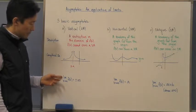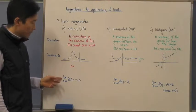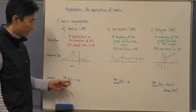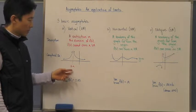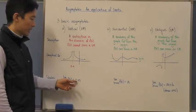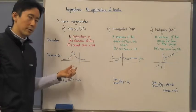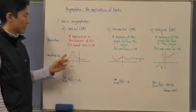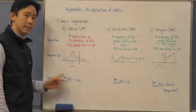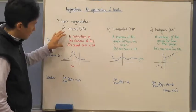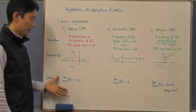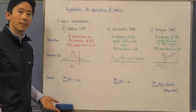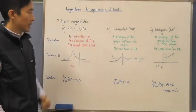From a calculus perspective, we can say that the limit as x approaches a of f of x is going to be positive or negative infinity — in this case, positive infinity. Because of that, this is considered a vertical asymptote. That's the description, the graph, and the calculus interpretation of a vertical asymptote.